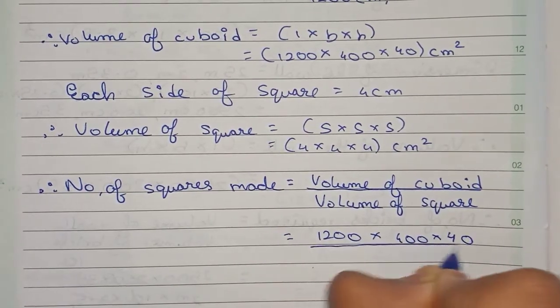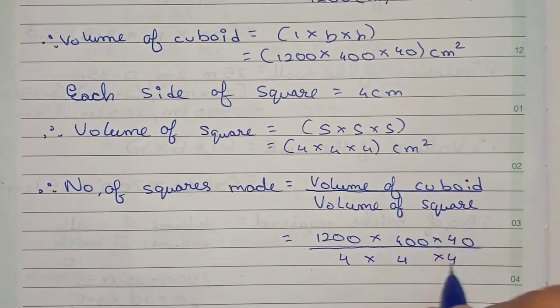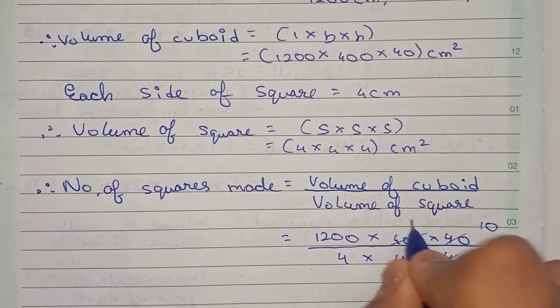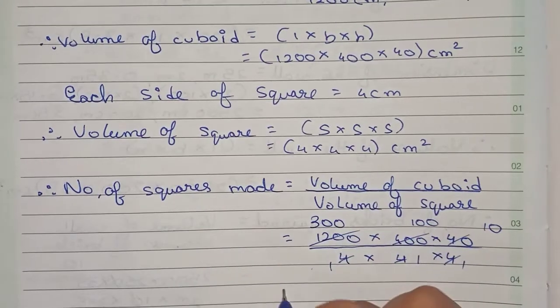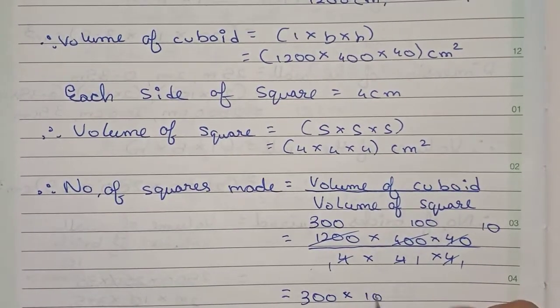So we cut all these numbers by 4. So 4 tens of 40, 4 hundreds of 400, and 4 three hundreds of 1200. So remains 300 into 100 into 10.